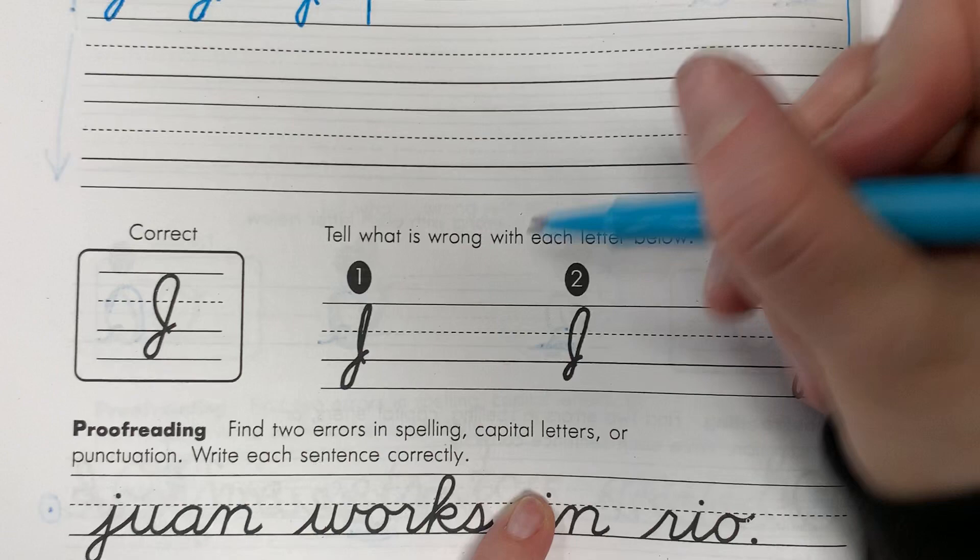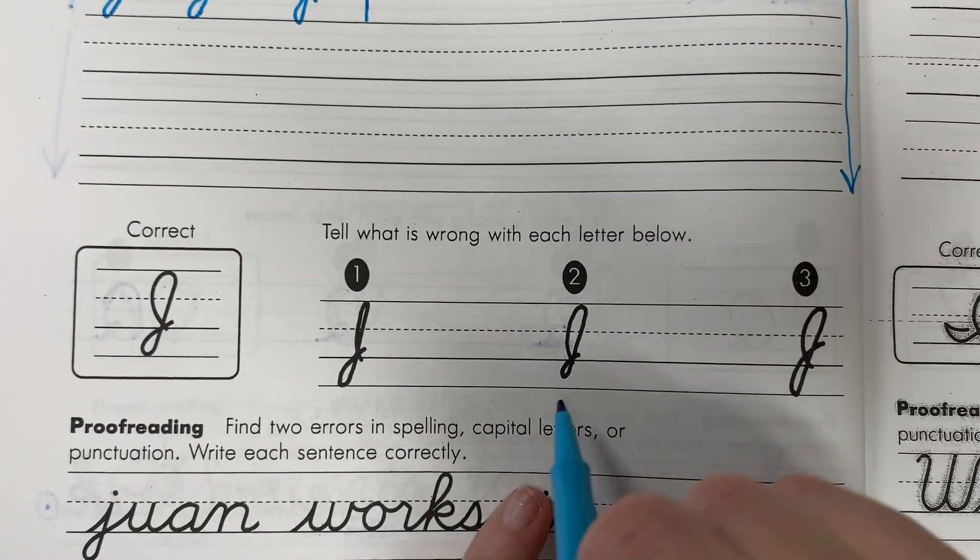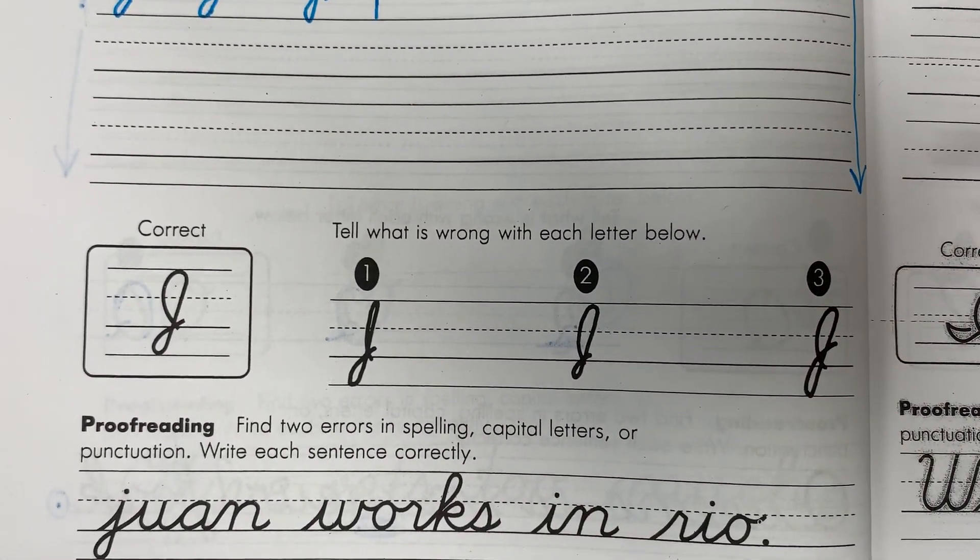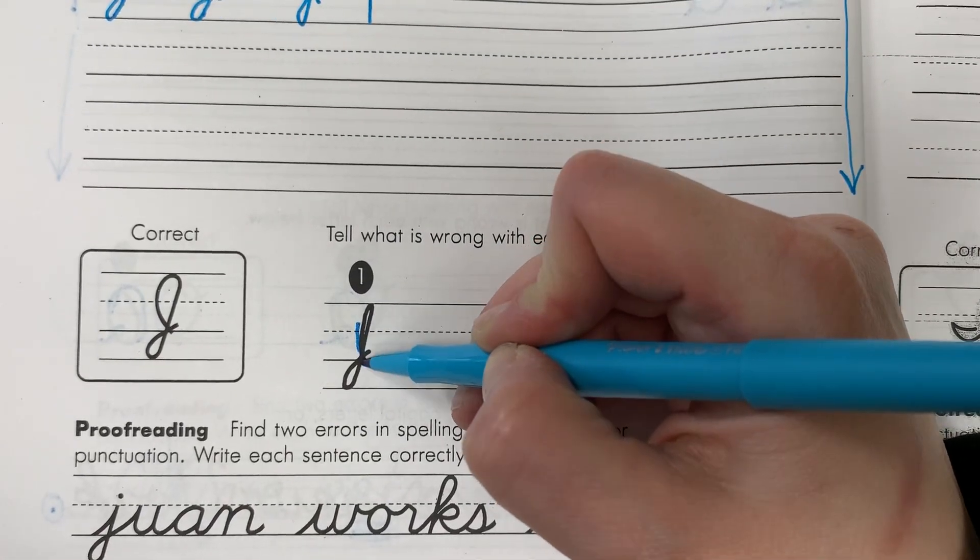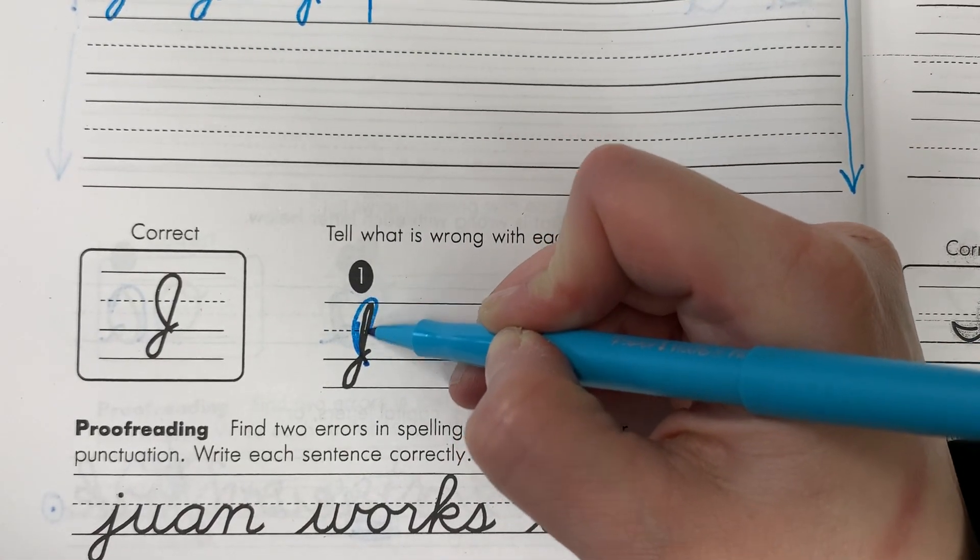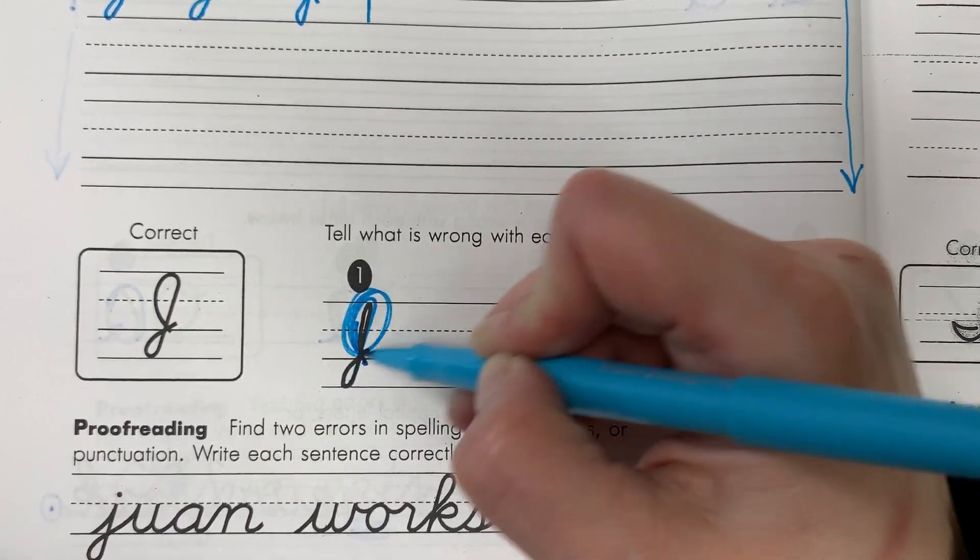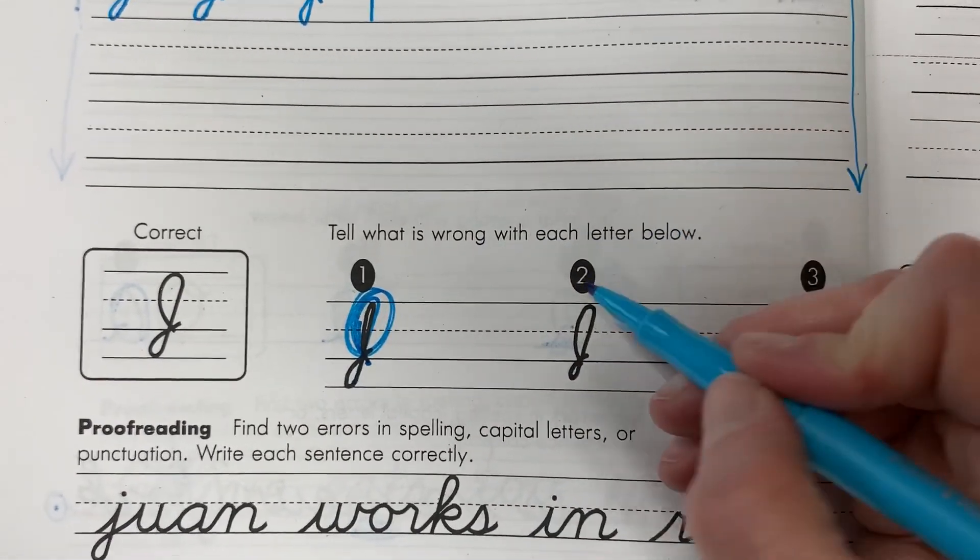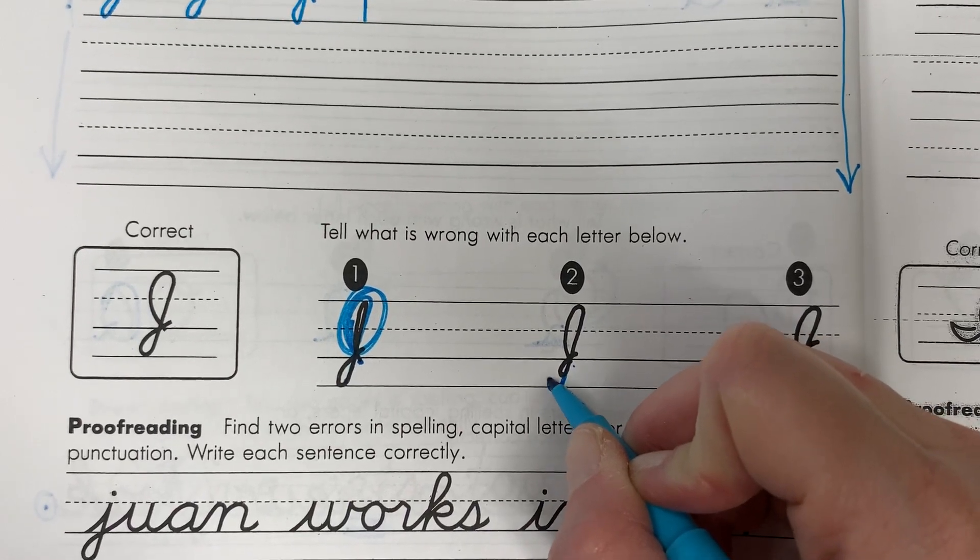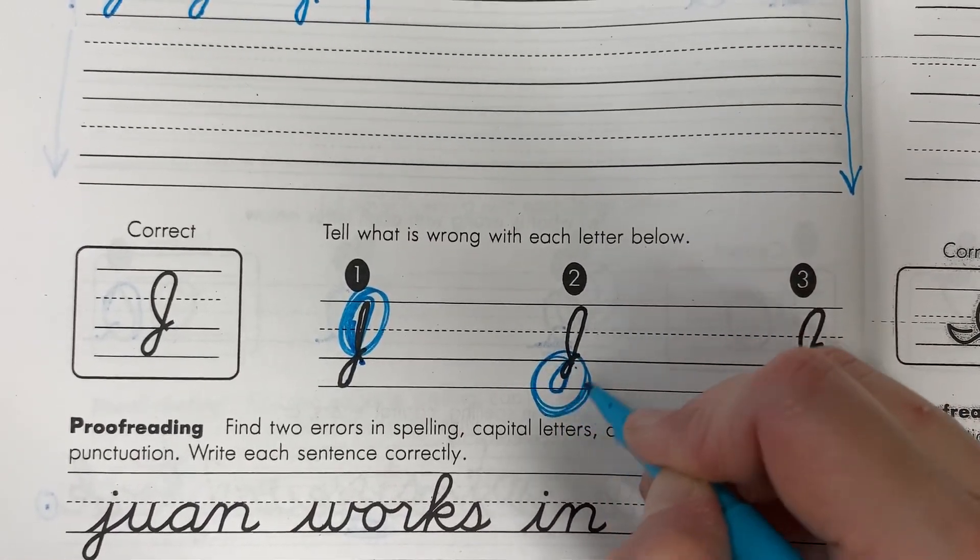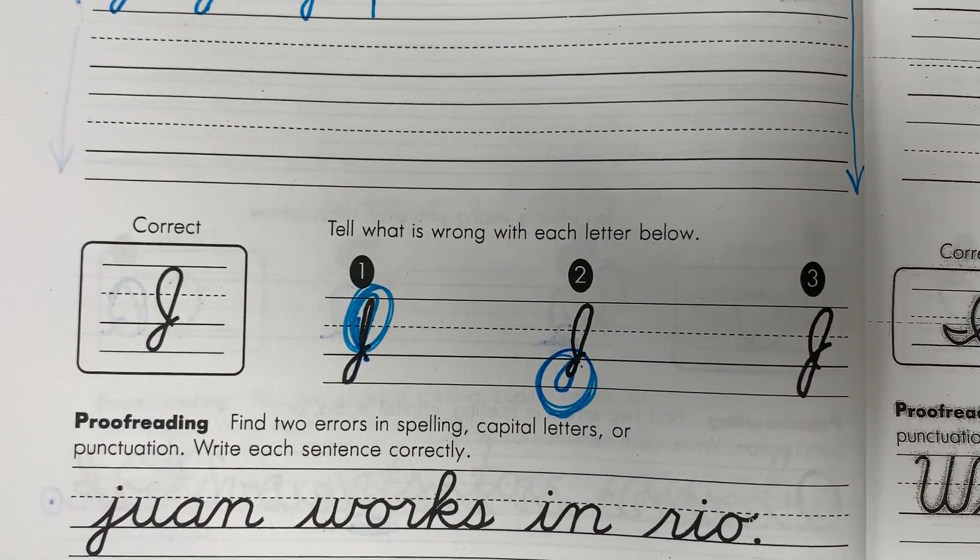But before you finish that section, let's talk about what's wrong with these to fix anything that you might be doing wrong with yours too. So in number one, this one should be going further over that way. So this top part is not wide enough. And number two, this part should be going all the way down here and then back around. So this part needs to be fixed.